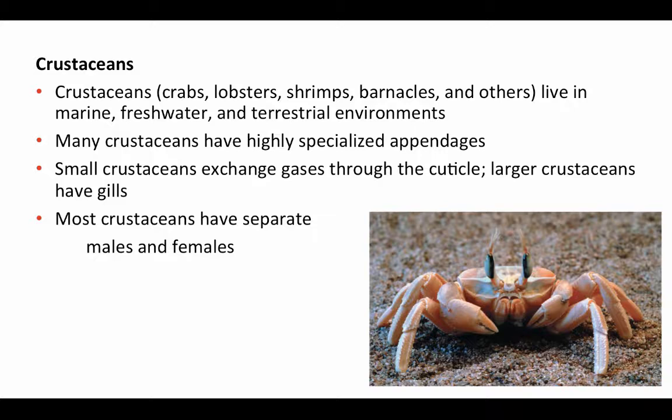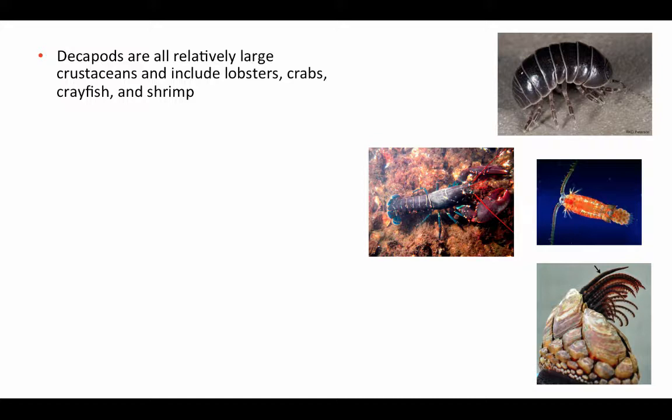Many crustaceans have highly specialized appendages — for example, the specialized pinchers and mouthparts seen in crabs. Small crustaceans can exchange gases through the cuticle by diffusion; larger crustaceans have gills to facilitate gas transport. Most crustaceans have separate sexes and reproduce sexually. Among the diversity of crustaceans, lobsters, crabs, crayfish, and shrimp belong to a group called the decapods — 'deca' meaning ten and 'pod' meaning feet — generally having five pairs of legs.